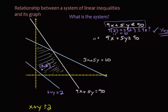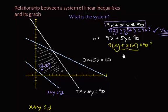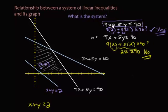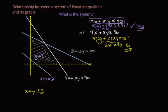To verify: if you plug 2 comma 2 into the other one, you get 9 times 2 plus 5 times 2 greater than or equal to 90. That equals 28, and 28 is not greater than 90. So our second inequality is 9x plus 5y less than or equal to 90.